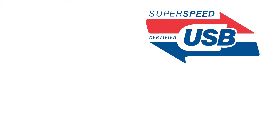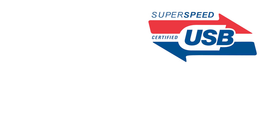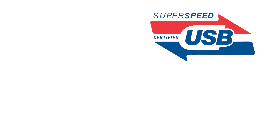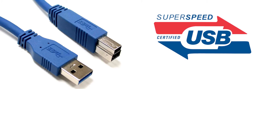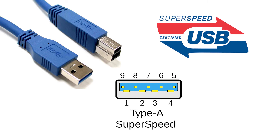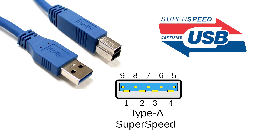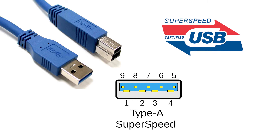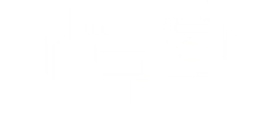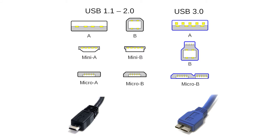In 2008, USB 3.0 Super Speed was introduced, which increased the theoretical speed to 5 Gbps. The connectors also had to change with the addition of 5 new pins, but keeping the bulk of the connector the same, which means USB 3.0 is backwards compatible with 2.0 devices, operating at a lower speed of course. The Type B micro USB connector had to change as well, looking bulkier compared to the older one, and they are not backwards compatible — simply physically unable to plug into each other.